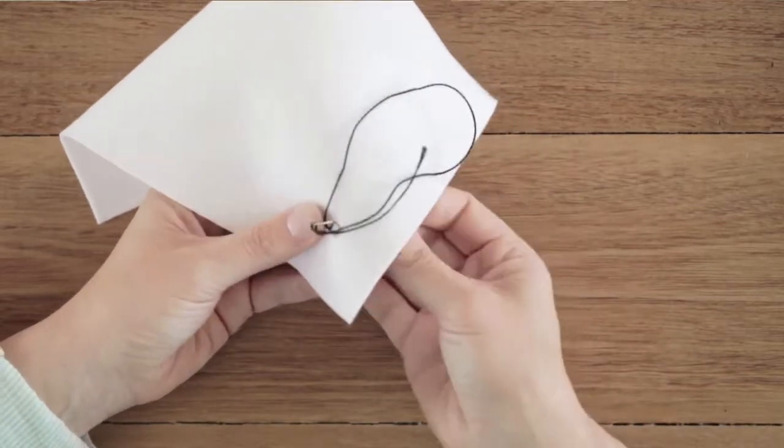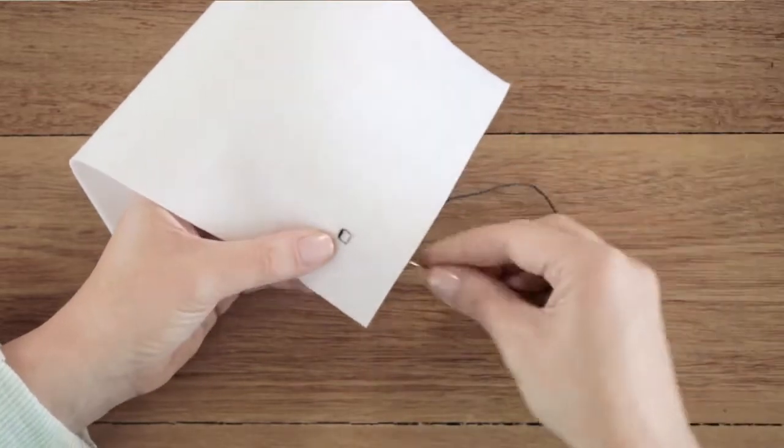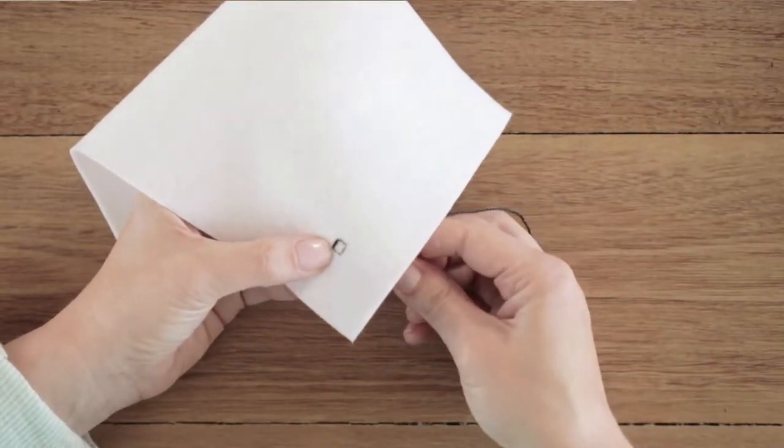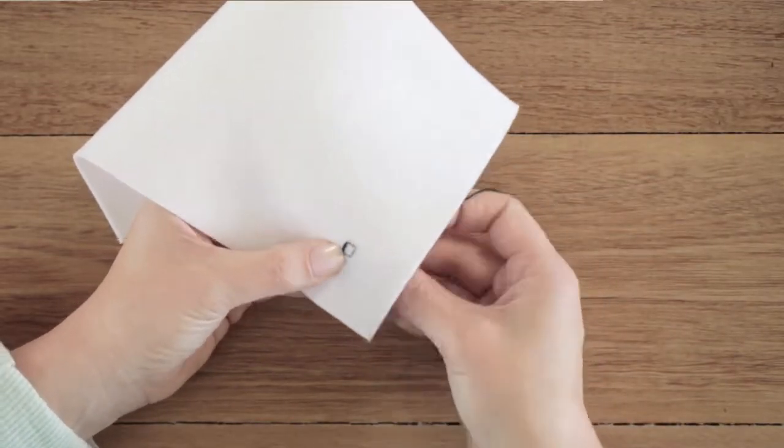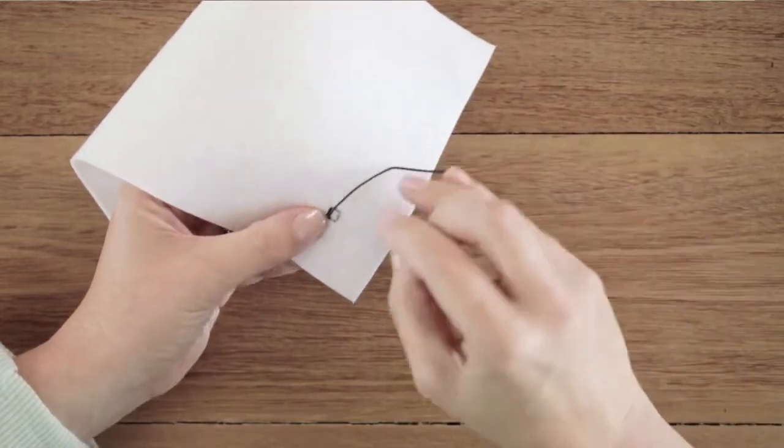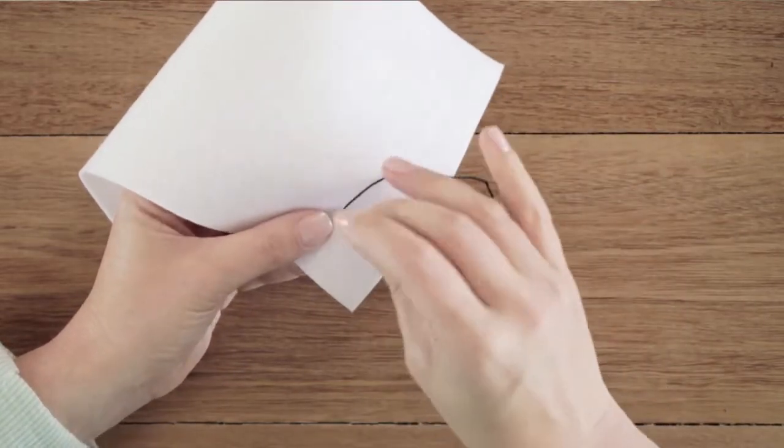Now the key with satin stitch is to keep your stitches close together. So our needle is going to come back up through the fabric right beside the other stitch and go down the other side.